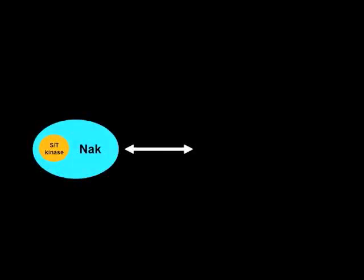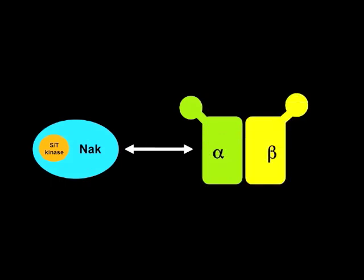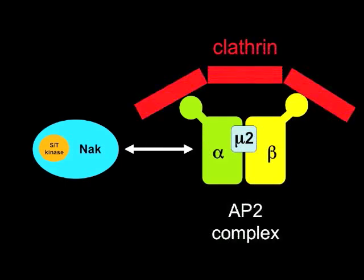By IP mass spectrometry, we first identified the major Nak-interacting proteins as alpha-adaptin, beta-adaptin, and mu-2-adaptin, which form adapter protein complex 2 (AP-2) that functions in recruiting clathrin to form the internalizing vesicle. Not only the protein interaction, but the genetic interaction also suggests that Nak mediates dendrite growth through endocytosis.